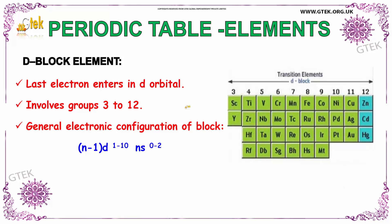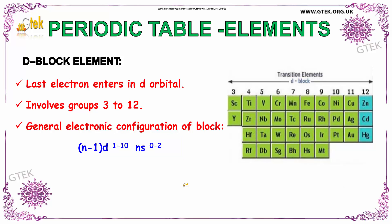For D block elements, the last electron enters in the D orbital. They involve the groups from 3 to 12. The general electronic configuration of the D block is (n−1)d¹⁻¹⁰ ns⁰⁻².